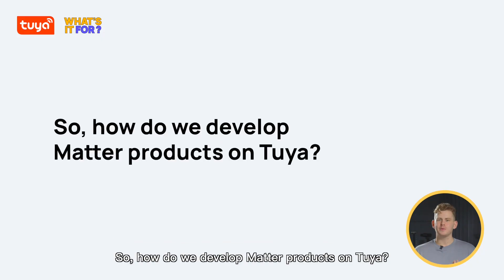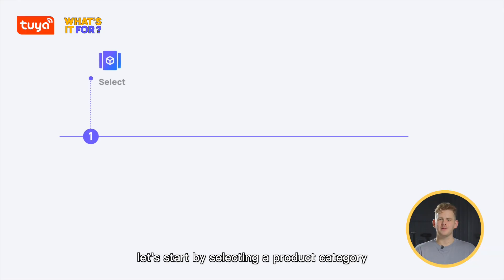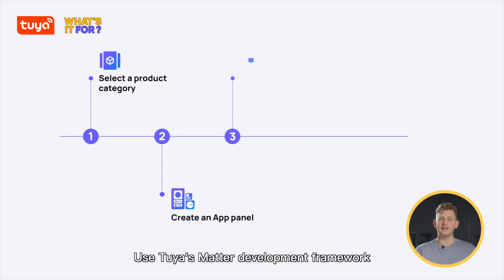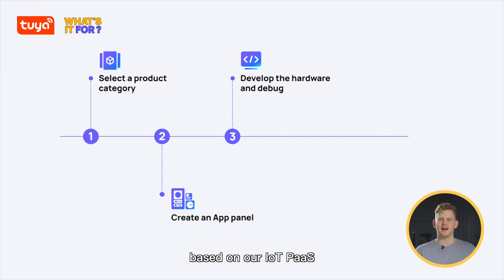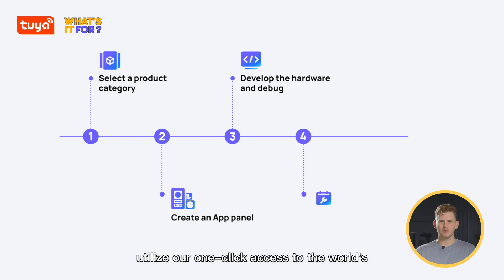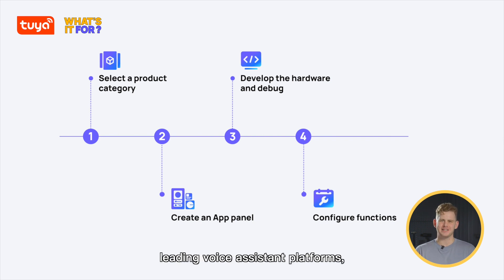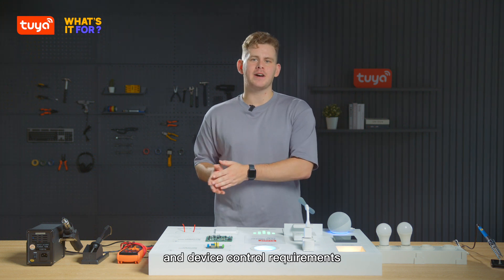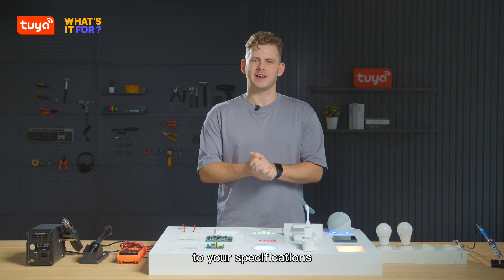So, how do we develop MATA products on Tuya? One, start by selecting a product category. Then, create a device control panel. Thirdly, use Tuya's MATA development framework based on our IAT pass to develop and test your MATA devices. Utilize our one-click access to the world's leading voice assistant platforms before configuring certain functions such as language and device control requirements to your specifications.